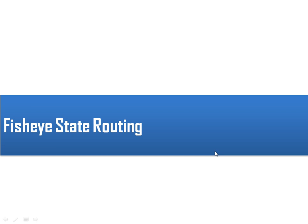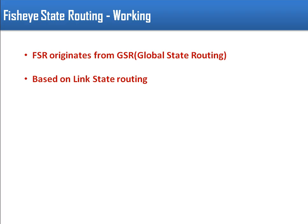In this video we will see Fish Eye State Routing. This routing actually originated from Global State Routing. In our previous tutorial I have mentioned that link in comments as well - you can refer that link to understand Global State Routing. Here I will just provide a brief of GSR. Before going to GSR, first of all there are some key points of Fish Eye State Routing: first, it is originated from Global State Routing, and second, it is based on link state routing.